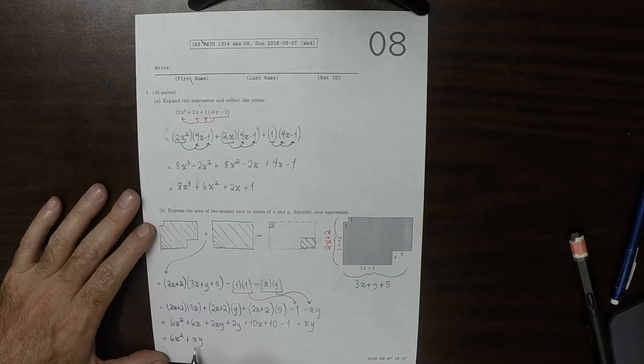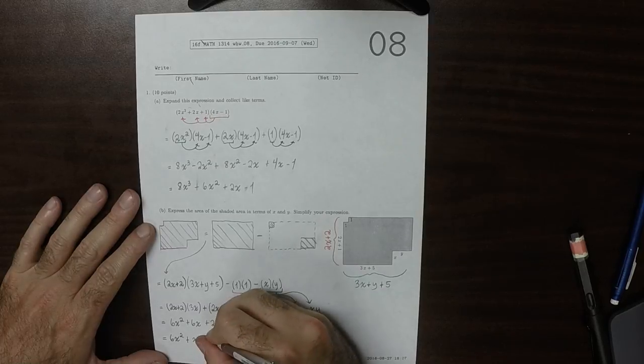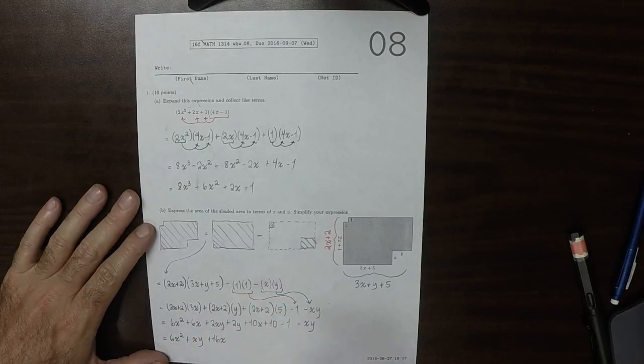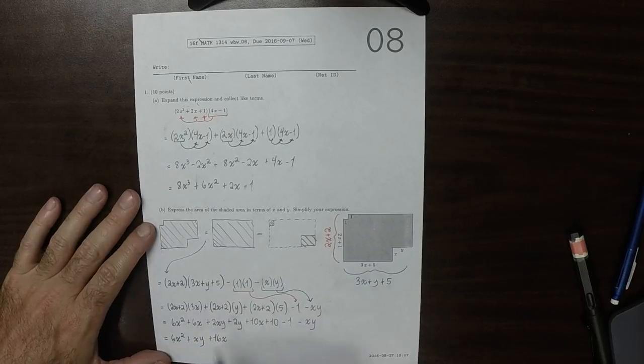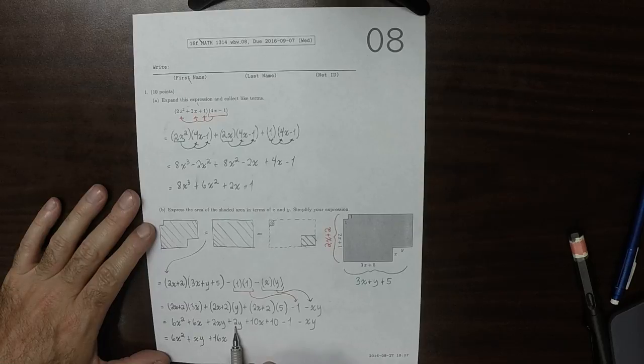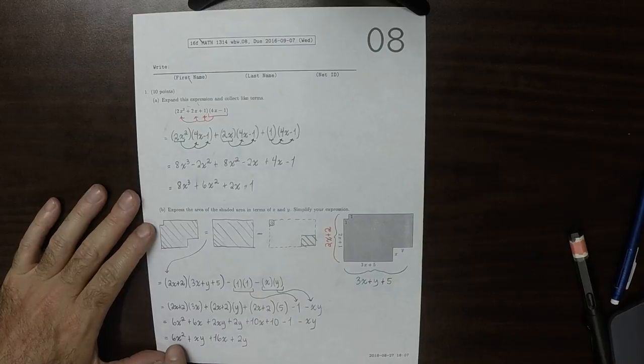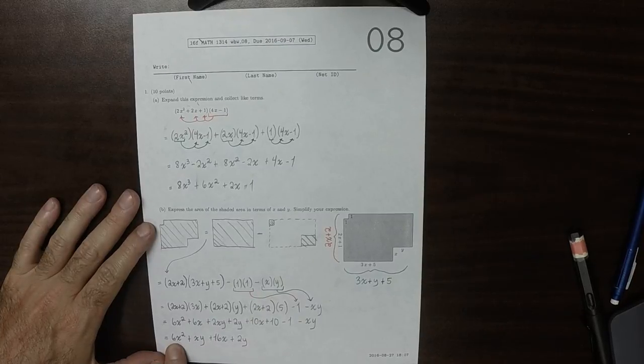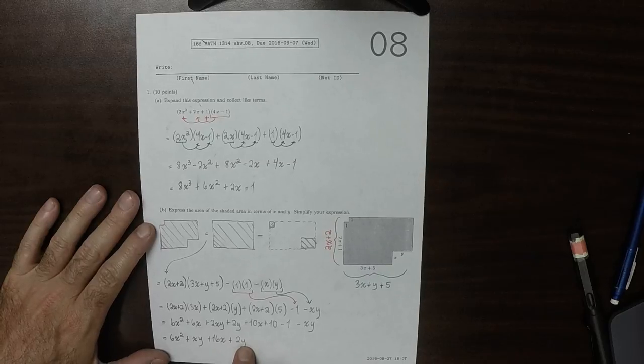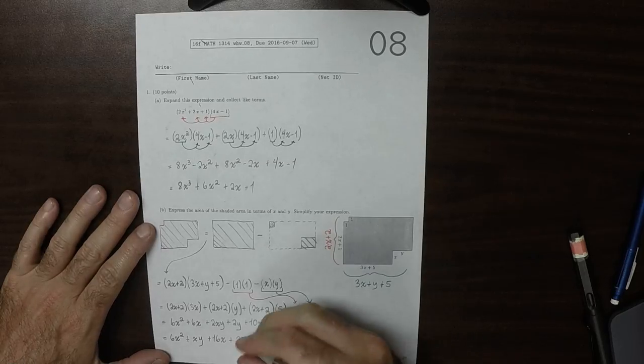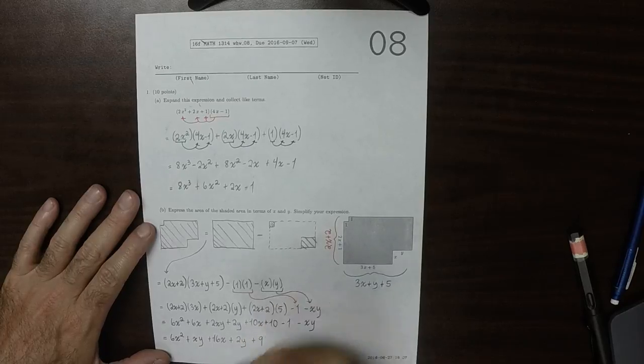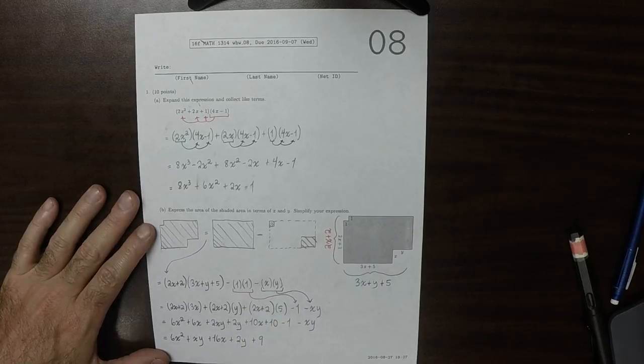Now I'll take just the ones that have a single variable. So 6x plus 10x, that would be 16x. Now just the y's. So 2y, and that's it. So plus 2y. So these are all the things with two variables in product, all the things with one variable in product. And so now the constants, 10 minus 1 is 9. And that's the answer.